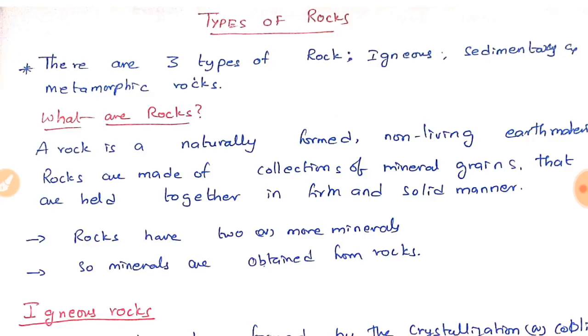If you think about rocks, the rocks found in the earth's crust are divided into three types: igneous rock, sedimentary rock, and metamorphic rock. What are rocks actually? A rock is a naturally formed non-living earth material. Rocks are made up of collections of mineral grains that are held together in firm and solid manner. Rocks have two or more minerals, so minerals are obtained from rocks.